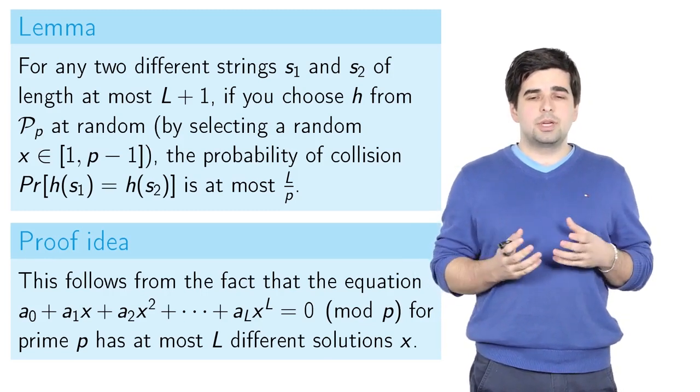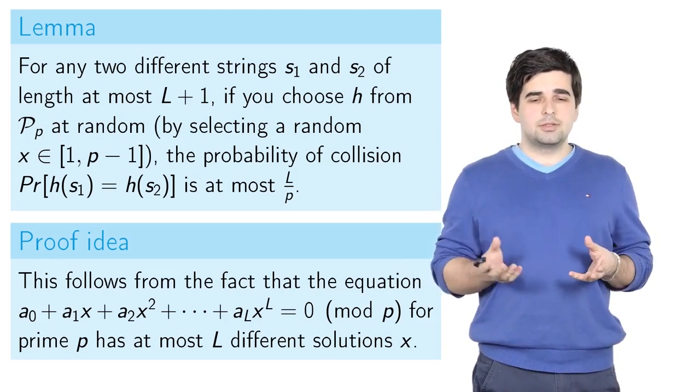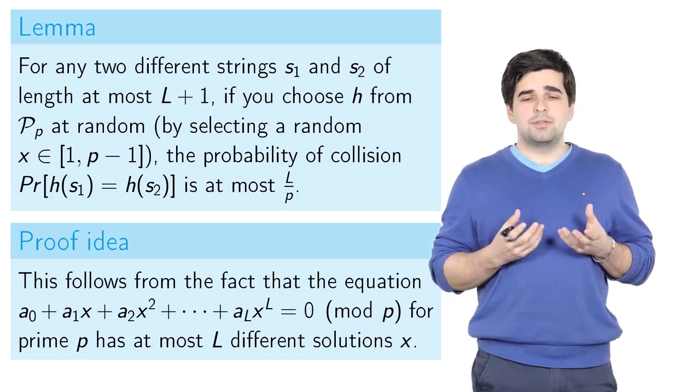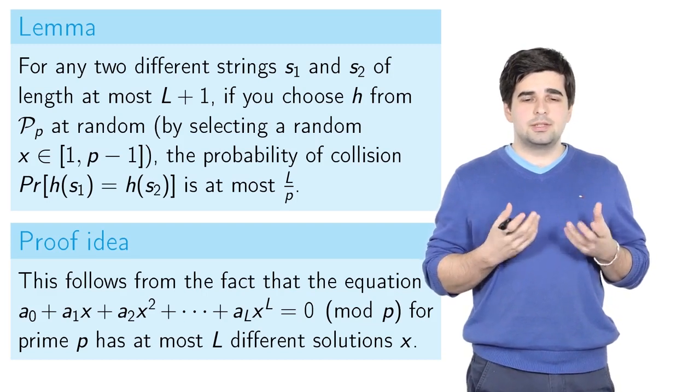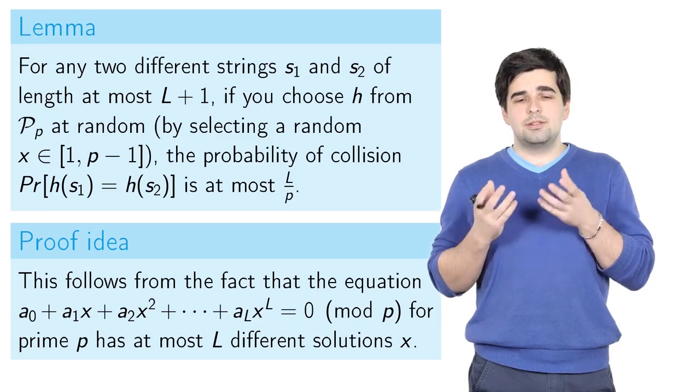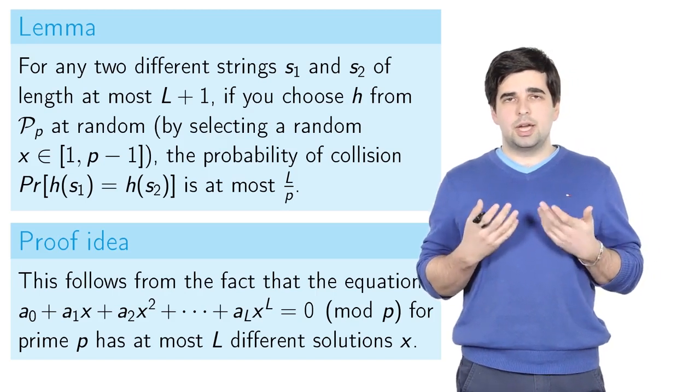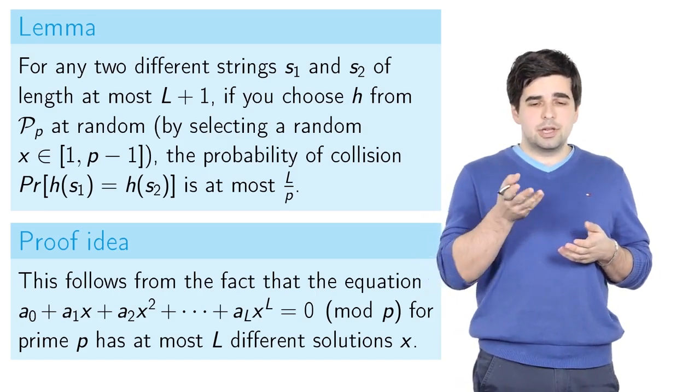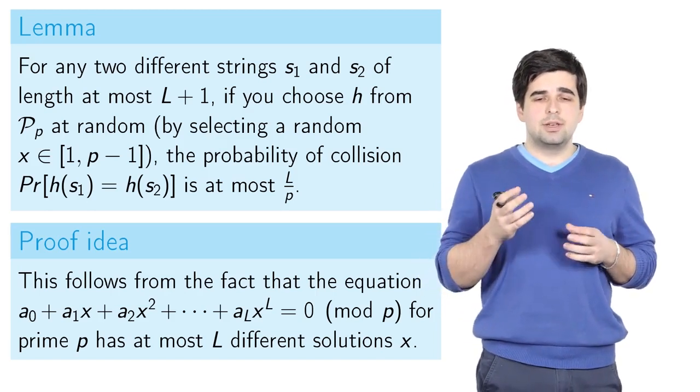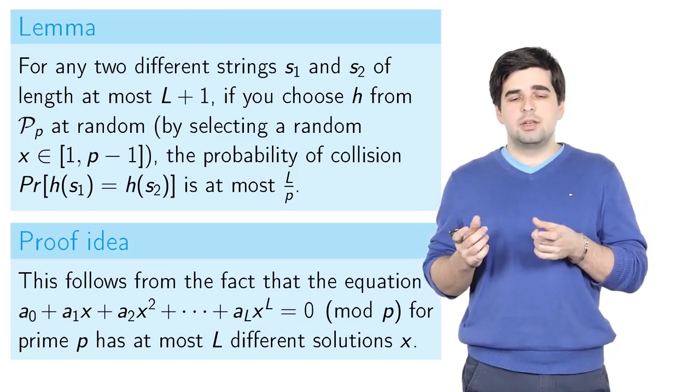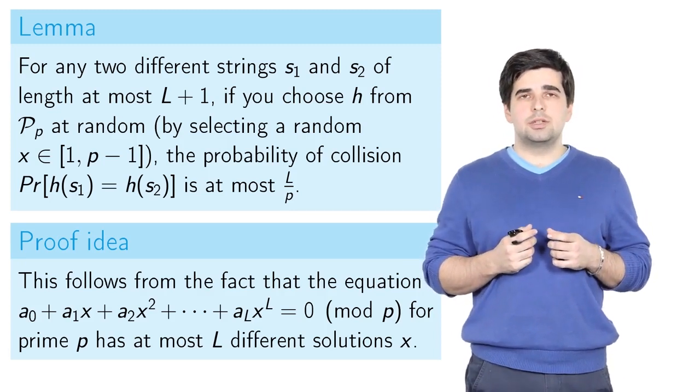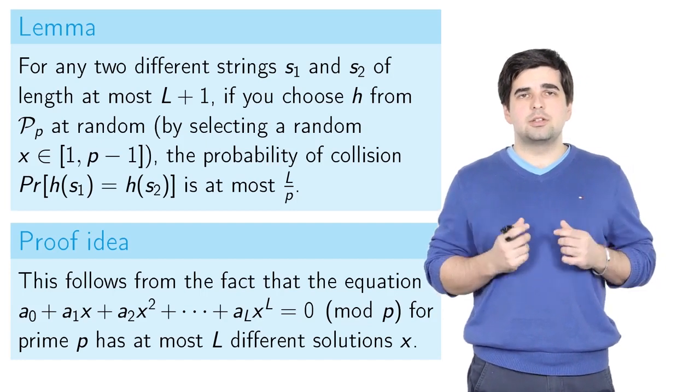The idea of proof of this lemma is that a polynomial equation of power L modulo prime number p has at most L different solutions x. Basically, when we consider two strings s₁ and s₂, the fact that the hash value for some hash function from the polynomial family is the same for these two strings means that x corresponding to our hash function is a solution of this kind of equation.